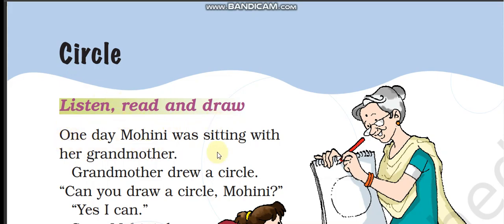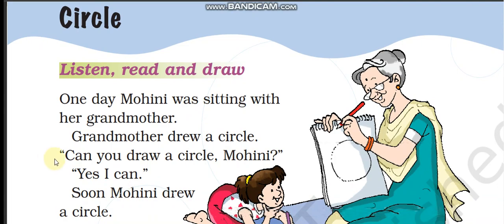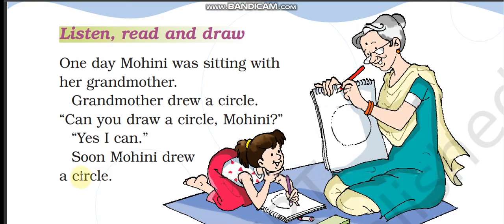One day Mohini was sitting with her grandmother. Ek din Mohini apne dadi maa ke saath baiti thi. Grandmother drew a circle. Dadi maa ne gola banaya. Mohini, kya tum gola bana sakti ho? Yes, I can. Haan, maa bana sakti ho.